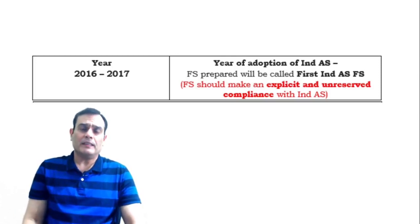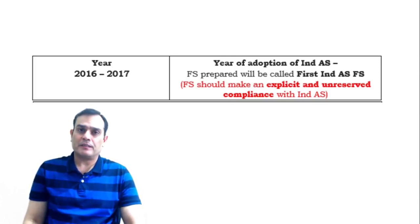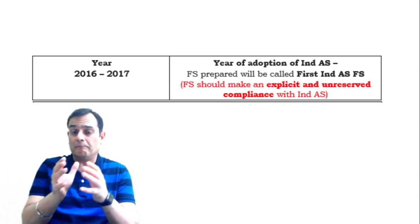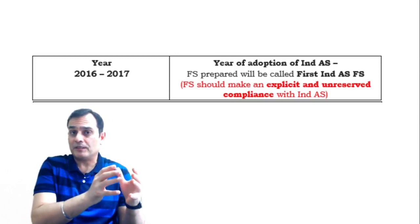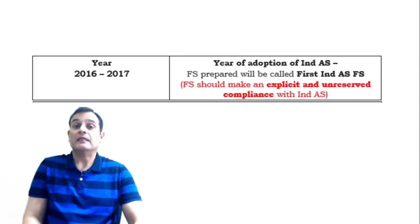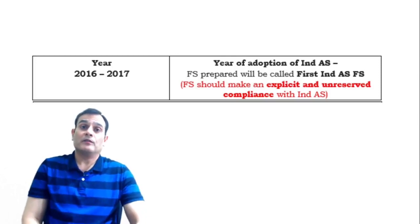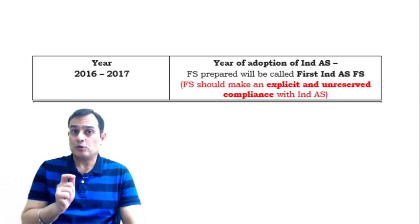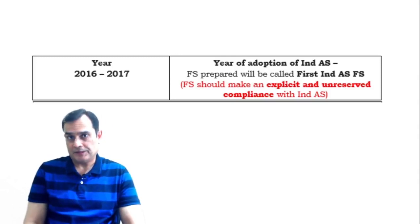Now when a company presents financial statements for 16-17, we also need to present comparative financial statements. In this particular example, the year 15-16 is supposed to be the comparative financial statements.